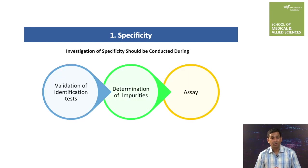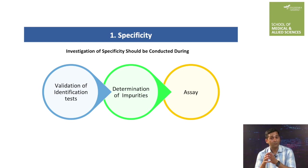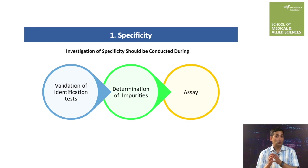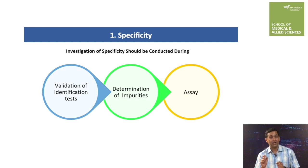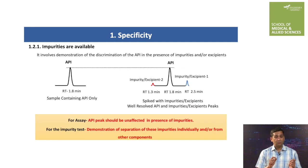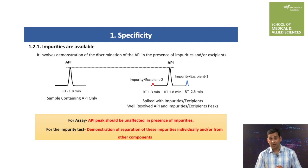Investigation of specificity of an analytical method should be conducted during validation of identification tests, determination of impurities, and assay. Specificity of an analytical procedure is demonstrated in two ways: the first when impurities are available, and the second when impurities are not available.